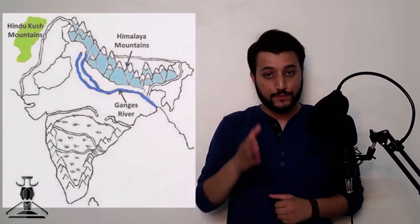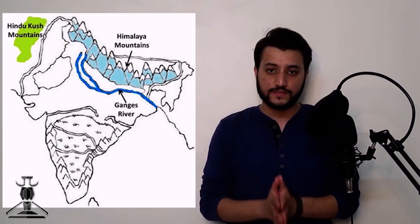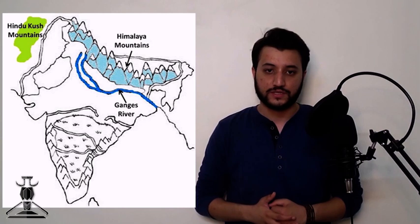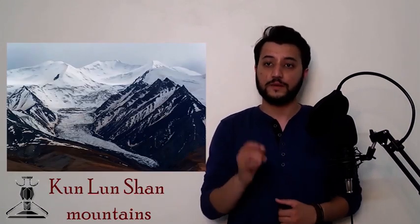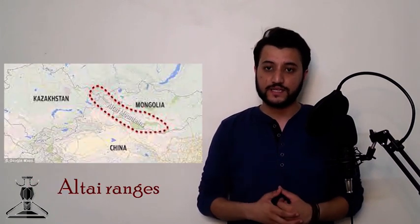Dhritarashtra then asks Sanjay to describe the portion resembling the rabbit in detail. This rabbit turns out to be Asia, especially the regions north of Bharatvarsha up to the Arctic Ocean, containing mountain ranges spread in the east-to-west direction like the Himalayas, the Kailash ranges, the Kunlunshan mountains, the Tianshan mountains, the Altai ranges, and the Sayana ranges. Sanjay names the six Kulaparvatas or mountain ranges in the rabbit-shaped region spread in the east-west direction.